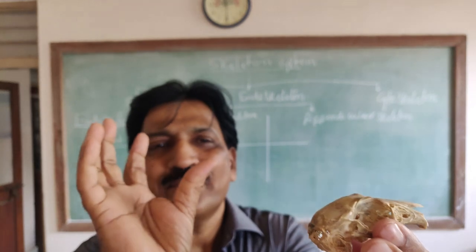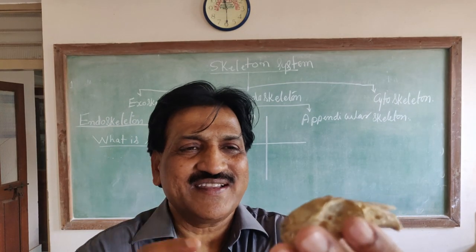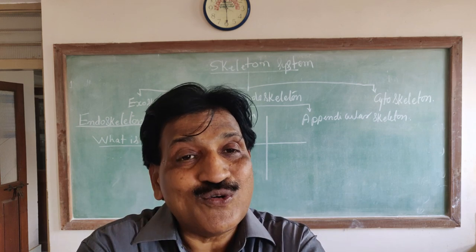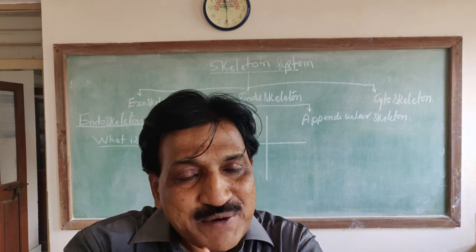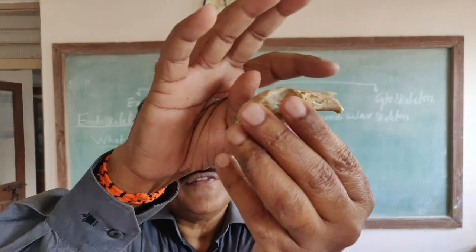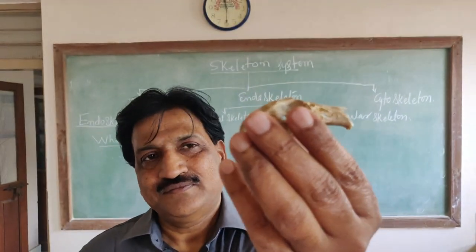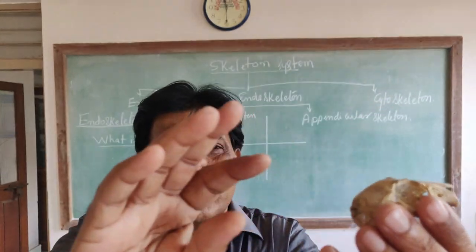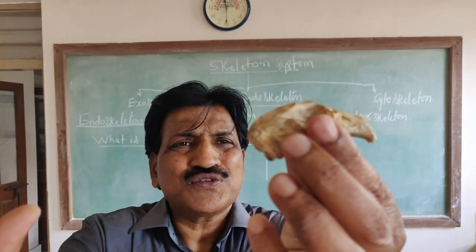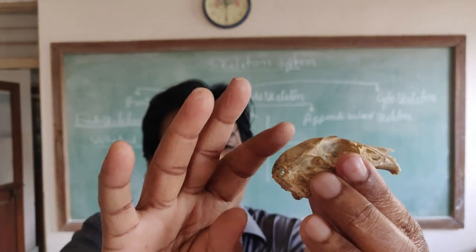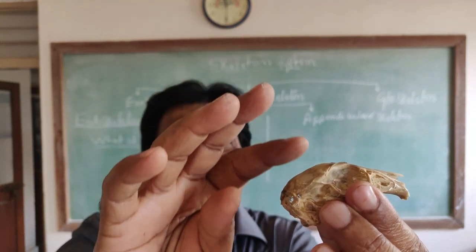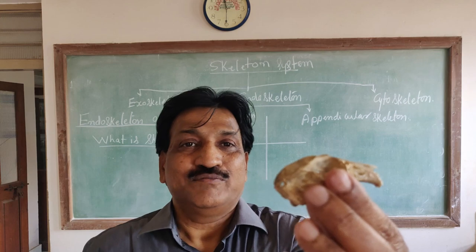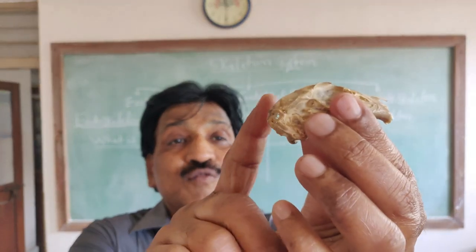The cranium part encloses the brain. The facial part is made up of bones maintaining the shape of the face. The skull of rabbit is completely made up of bones — it is called an ossified skull because it is completely made up of bones.